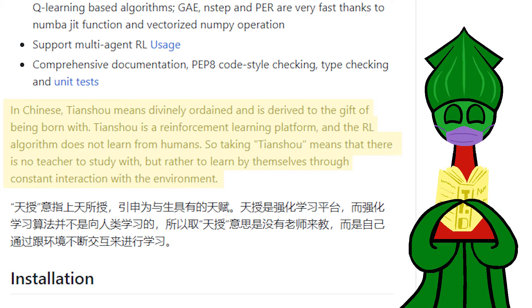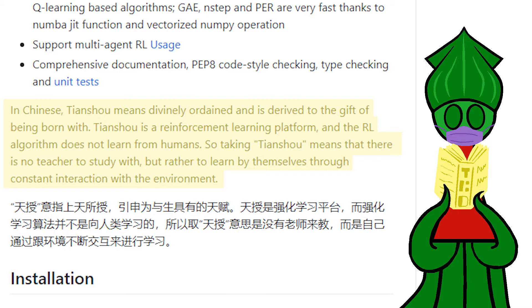The GitHub README explains: in Chinese, TianQi means 'divinely ordained' and is derived from the gift of being born with. TianQi is a reinforcement learning platform, and the reinforcement learning algorithm does not learn from humans. So taking TianQi means there is no teacher to study with, but rather to learn by themselves through constant interaction with the environment.